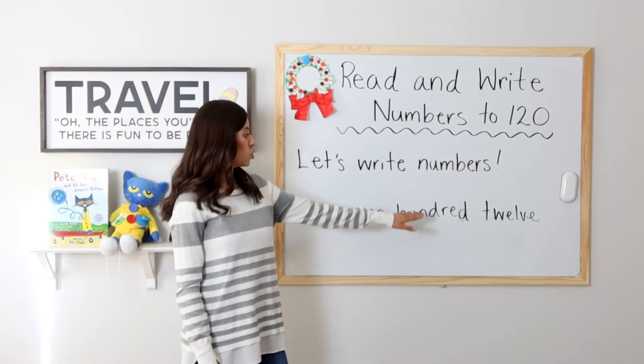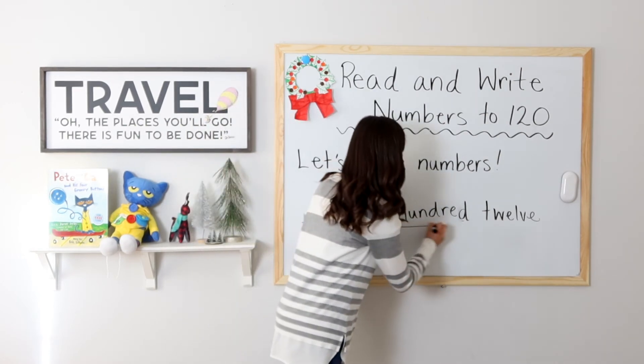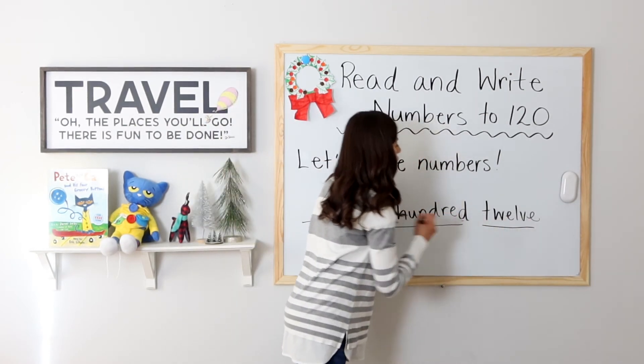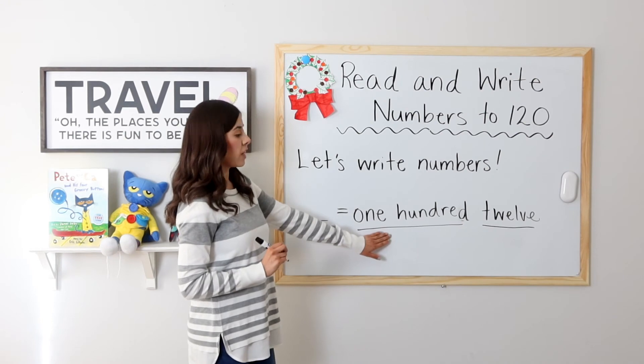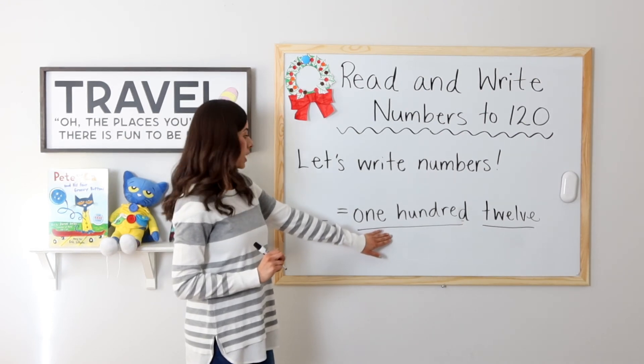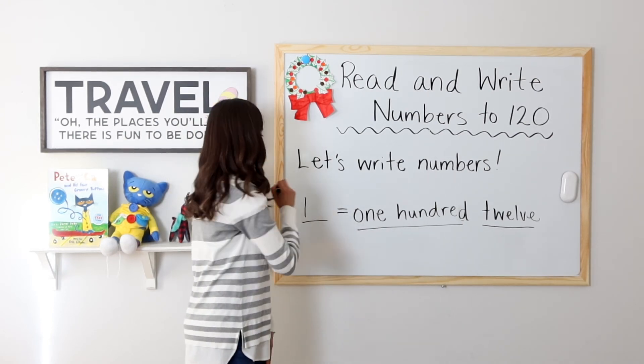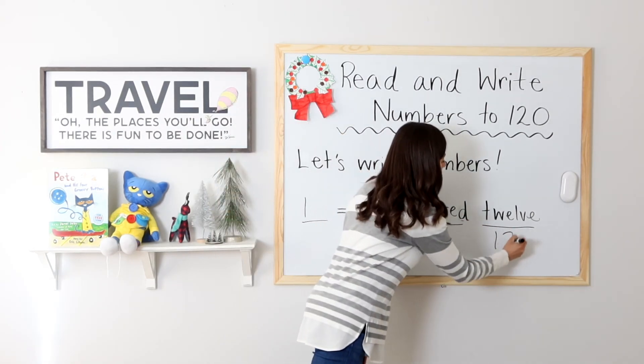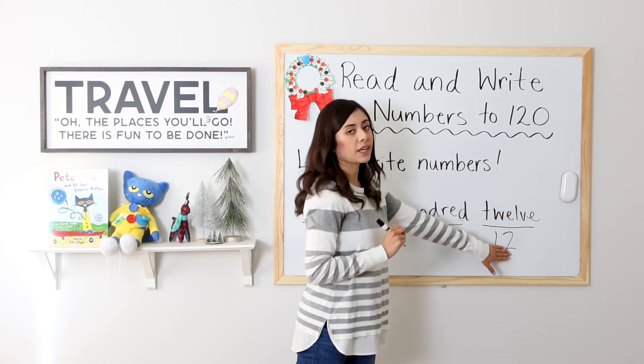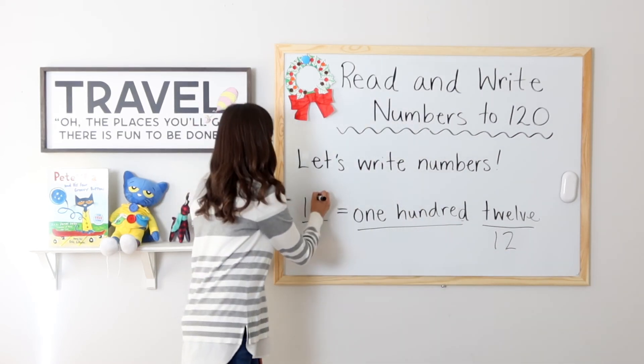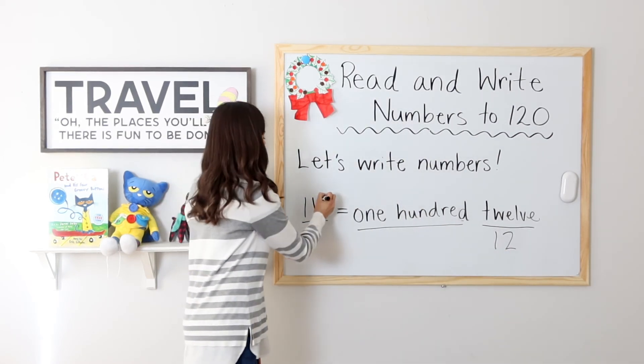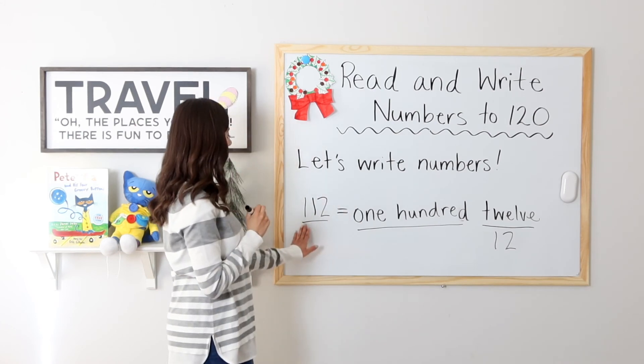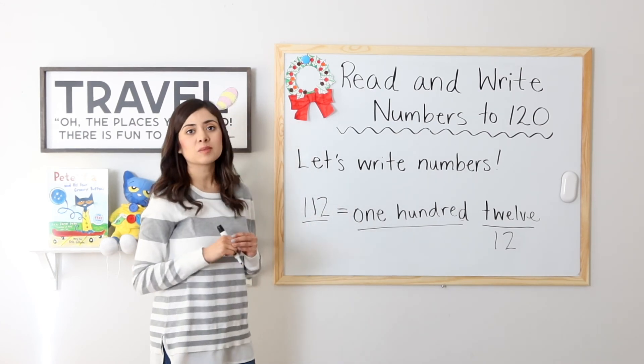I have 112. So that's 112. We know that we have how many hundreds? One. So one in the hundreds place. And then we have 12. We can see that as one ten and two ones. So one ten, two ones. That's 112. Awesome job.